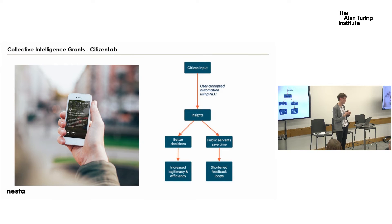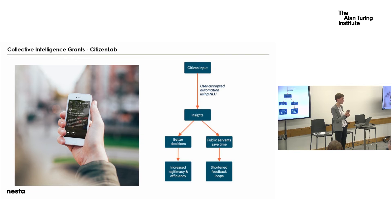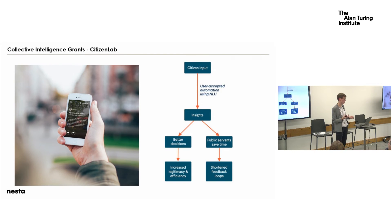I want to quickly talk about one of our grantees, Citizen Lab, a citizen engagement platform for local authorities. They're already using natural language processing to cluster similar ideas on the platform and extract keywords for citizens to find similar ideas. As part of our grants program, they started looking into whether they can use natural language understanding to translate unstructured citizen data into policy recommendations that can then be taken up by policymakers in local authorities — ongoing work to identify where this adds most value and where automation is necessary.